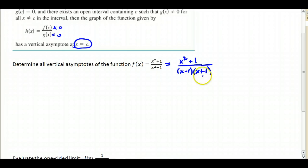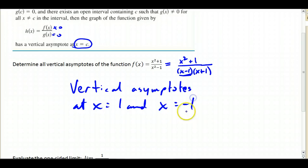So it looks to me like I've got two vertical asymptotes. Vertical asymptotes at x equal positive 1, because that would make that factor 0, and x equals negative 1.